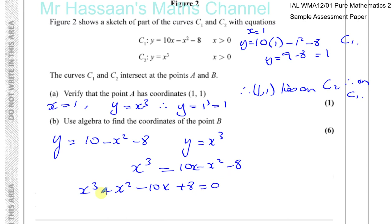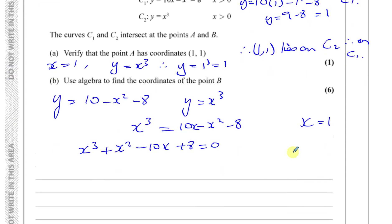We know that one solution to this equation is when x equals 1. If that's a solution, then x minus 1 is a factor. By the factor theorem, if you substitute a value into the equation and get zero, then x minus that number is going to be a factor. We can find the other factor in two ways: long division or by recognition.